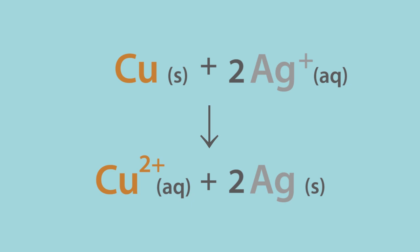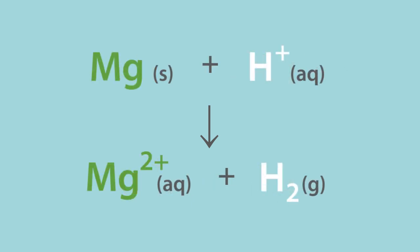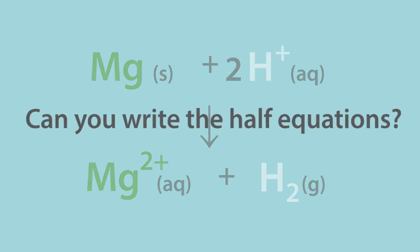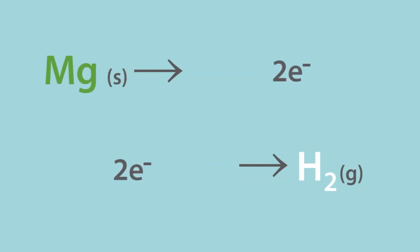Let's go through a slightly more complicated example. Magnesium metal reacting with acid. In this example, we only need the H plus ion from the acid. The anionic part is the spectator ion. Balancing this equation is really simple. Just double the number of H plus ions and everything balances. Can you write the half equations for this reaction? Pause the video again whilst you work it out. Got them?